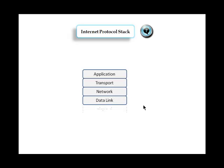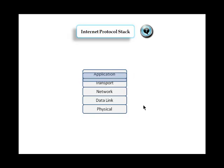The stack also includes the data link layer and the physical layer. In the application layer, we have several protocols such as HTTP, Telnet, DNS, FTP, and others. In the transport layer, we have protocols such as TCP and UDP. In the network layer, we have protocols such as IP and routing protocols.